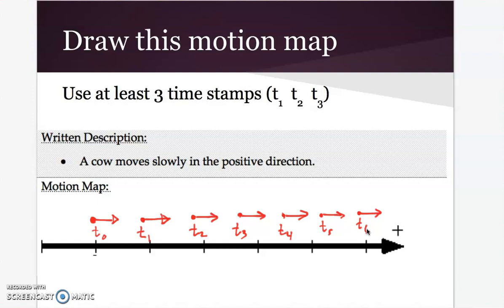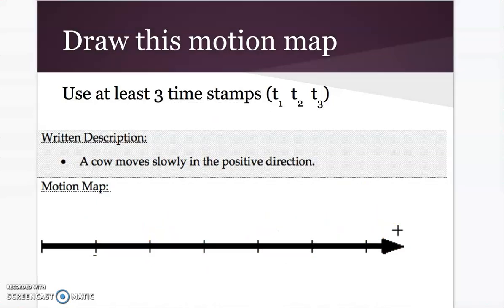So this motion map idea is really meant to help you think about, what does it mean if something is moving in the positive direction or the negative direction? What does it mean if it's speeding up or slowing down? And really showing that with these arrows. And these arrows you're drawing are vectors. They're showing us our velocity of our cow.